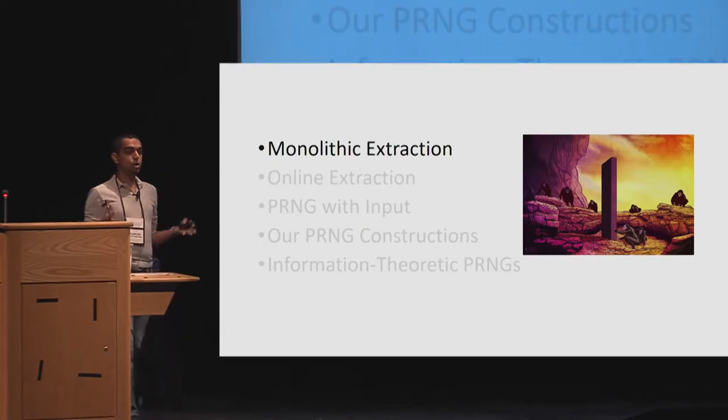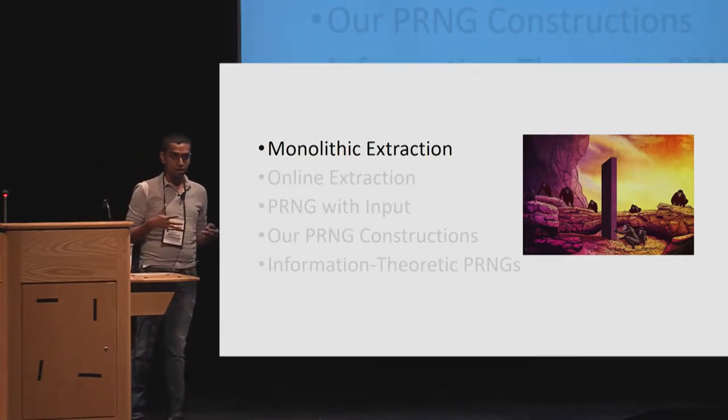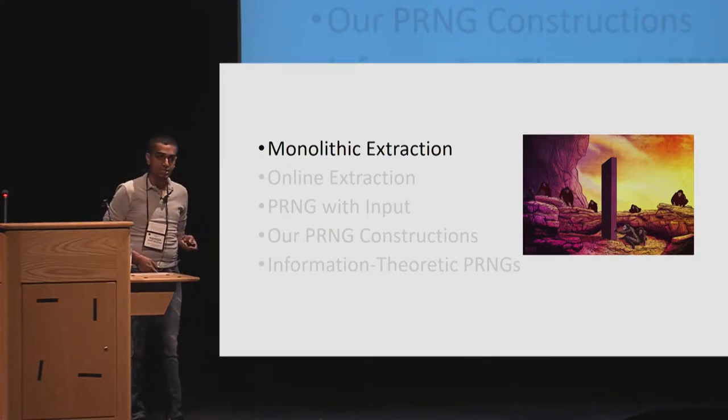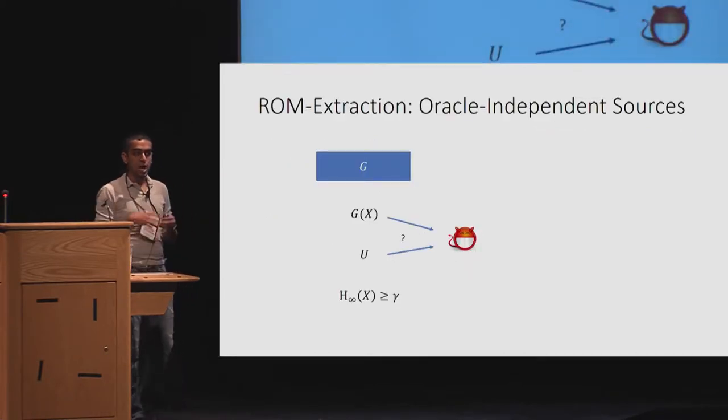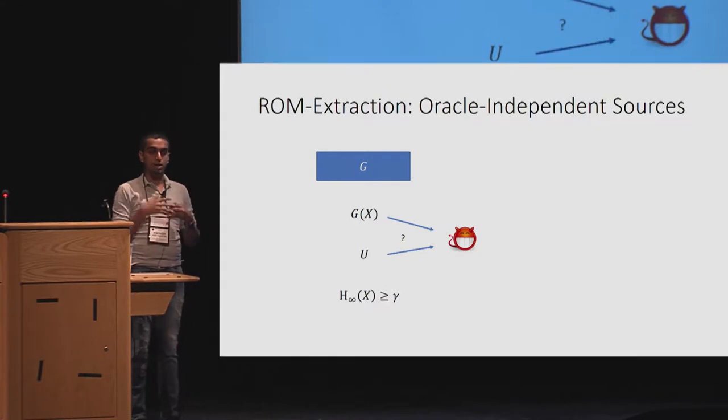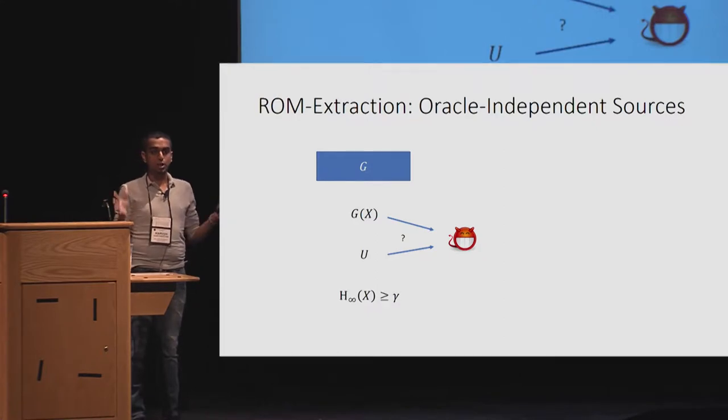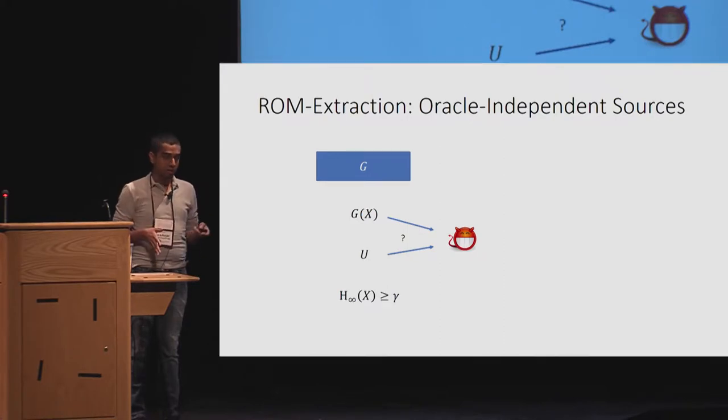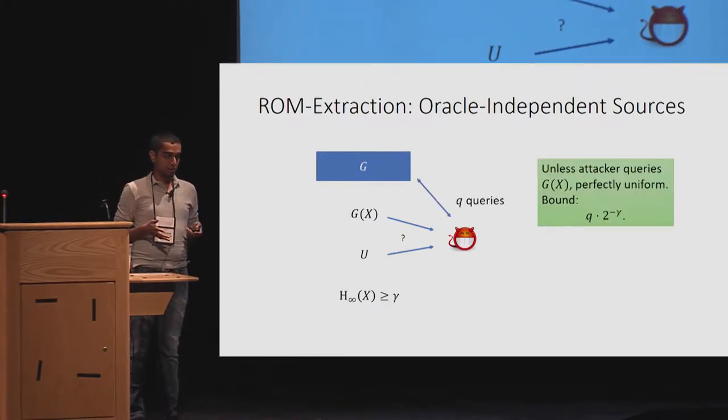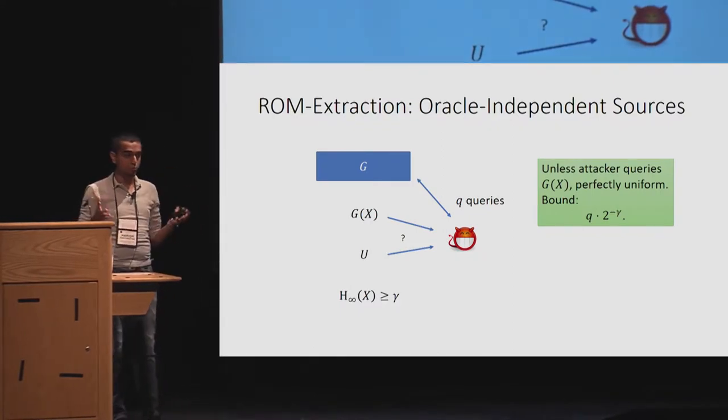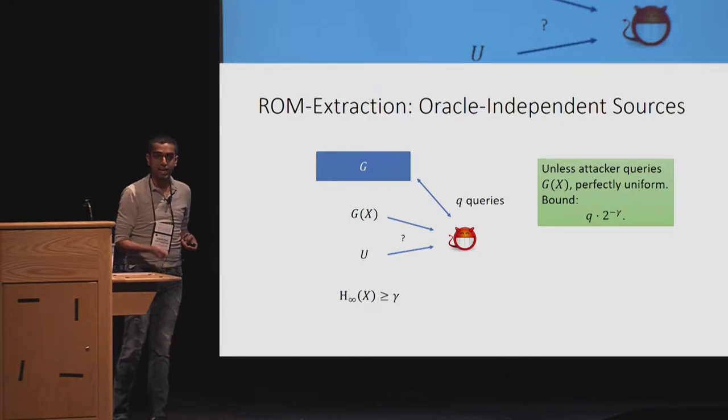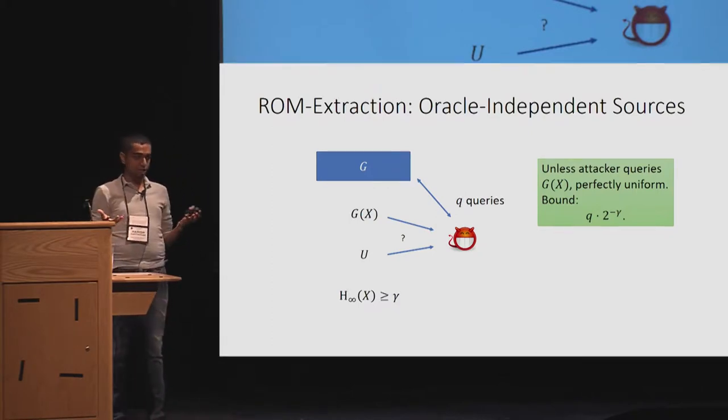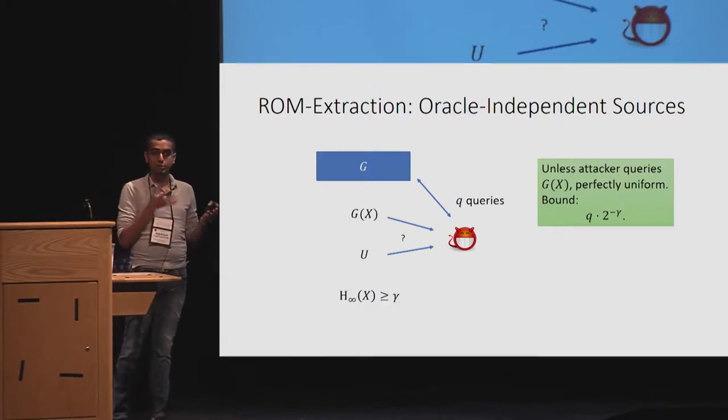As we discussed earlier, we have that cryptographic hash functions were used. So the large part of our paper deals with looking at these RNGs in practice, but analyzing in idealized models. We look at monolithic extraction from the random oracle setting. More formally, we look at random oracle model extraction from oracle-independent sources. Here, we have X, which is an arbitrary distribution. The goal of the adversary is the construction is simple. We apply a monolithic random oracle, G, on the input X. The adversary is allowed to query the oracle G.